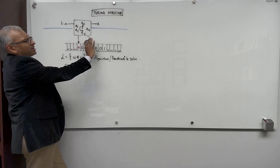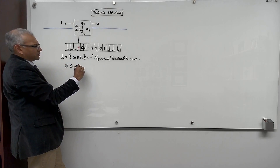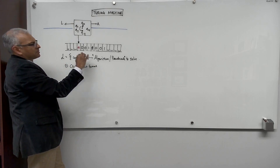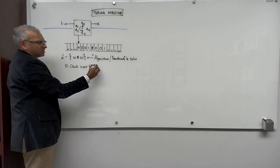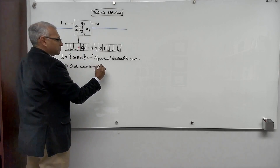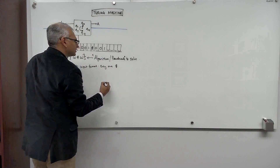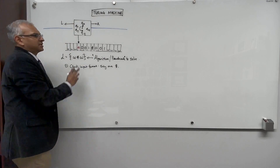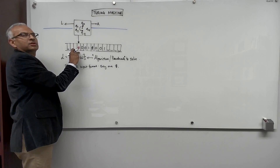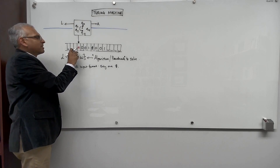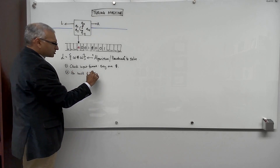The first thing that the machine might do is move right and verify the format — check the input format. So you move right until you come to a blank, checking that there's only one pound, only one punctuation pound. After you have checked that, you will have come all the way to the right. You need to now go back to the beacon star — go back to star.